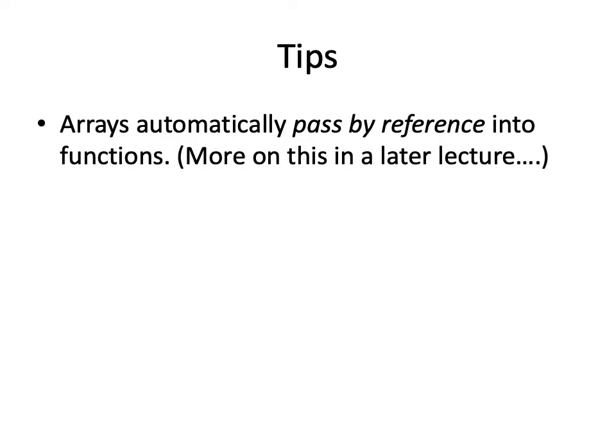So here are some tips. The first is that arrays automatically pass by reference into functions. What that means is that when I pass an array into a function, say from the main function to my print array function, the computer will take the location of the array in the main function, in memory, and it will share that location to the function that I call. So it's not going to copy all of the values in that array to this new function's memory. It's going to just pass the location, which is going to be fast.